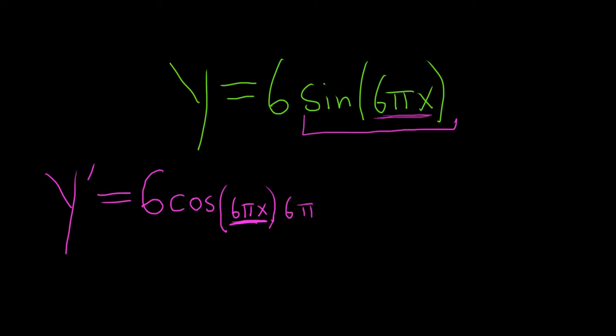Right? So again, you take the derivative of the outside, so the sine function is the outside function. So you get cosine, you leave the inside untouched, and then you multiply by the derivative of the inside function. The derivative of 6 pi x is simply 6 pi, because the derivative of x is 1. The last thing to do is multiply the 6 and the 6 pi.